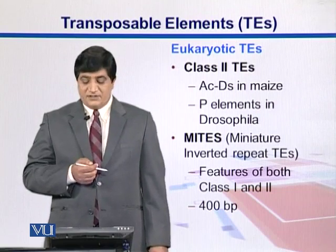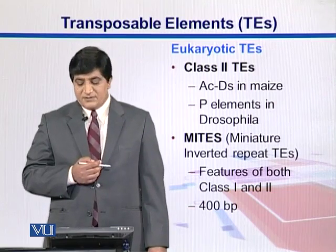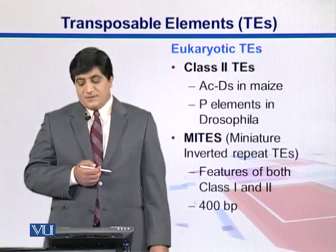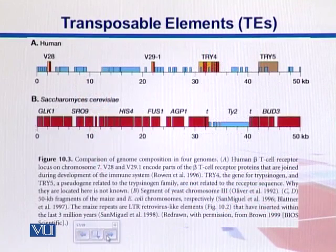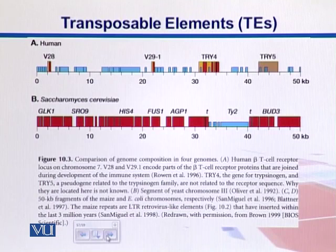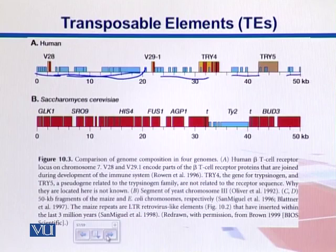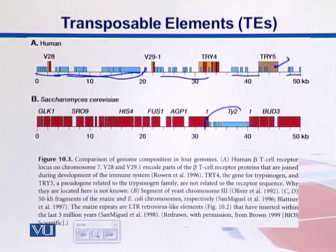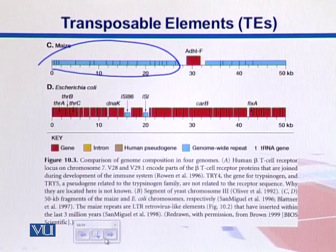There are additional elements called MITEs — miniature inverted repeats — which have features of both Class 1 and Class 2 and are about 400 base pairs long. In this diagram we see a comparison of human, yeast, maize, and E. coli genomes over a 50 kb region. The blue regions represent repetitive transposable elements; we see a large proportion of blue in humans. Red regions are exons, orange are introns, and there are also pseudogenes. In yeast there is a much smaller proportion of transposable elements, while in maize the proportion is very large.